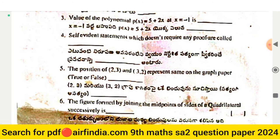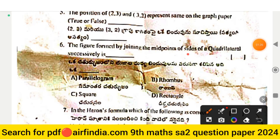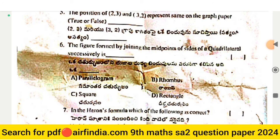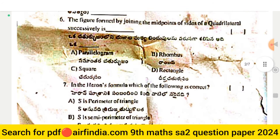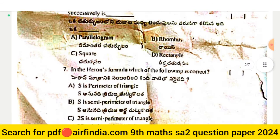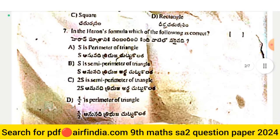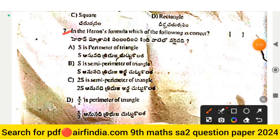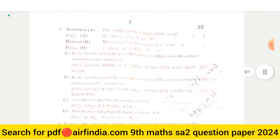The next question: the figure formed by joining the midpoints of the sides of a quadrilateral successively is what? Options include parallelogram, rhombus, square, and rectangle. Question number seven: in Heron's formula, which of the following is correct? Options A, B, C, and D are provided.